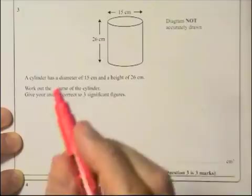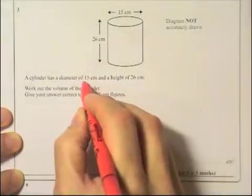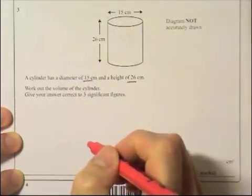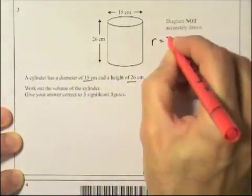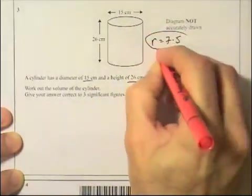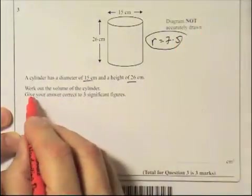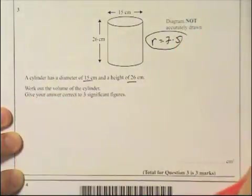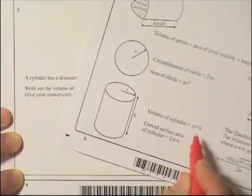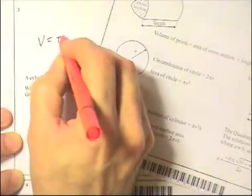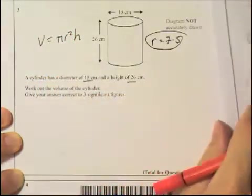Question 3 shows a cylinder. It's got a diameter of 15 and a height of 26. The first thing, I never work with diameters, I always work with radius. So if the diameter is 15, the radius is 7.5. I always write it down. It then asks us to work out the volume of the cylinder. Let's have a look at the formula sheet. Yes, the volume of the cylinder is on the formula sheet. So volume equals pi r squared h. I didn't even have to remember it.